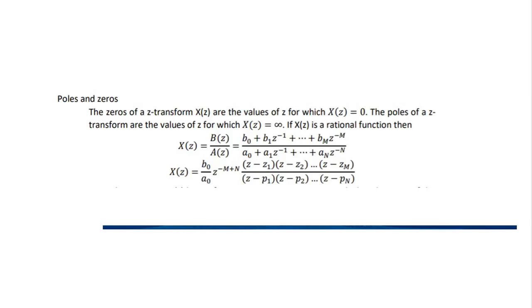A quick review: poles and zeros. The zeros of a Z-Transform X(z) are the values of z for which X(z) equals zero. The poles of a Z-Transform are the values of z for which X(z) equals infinity. This is a rational function.